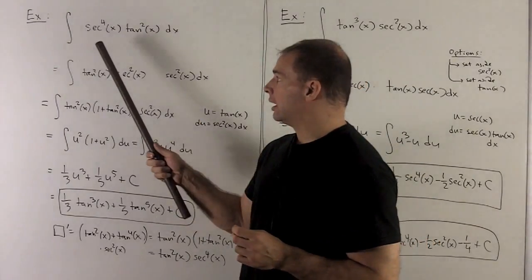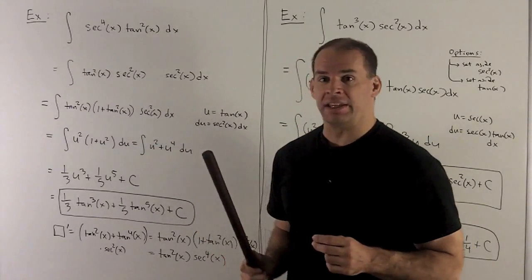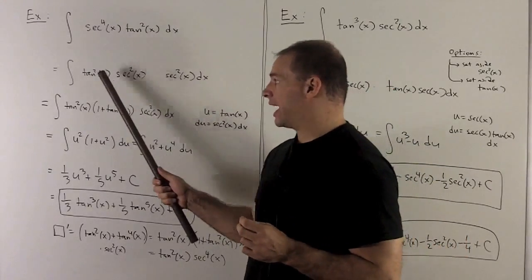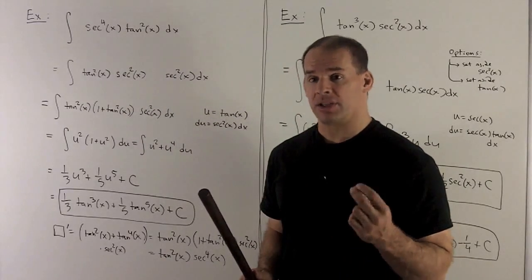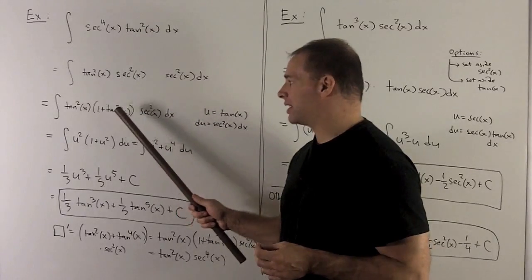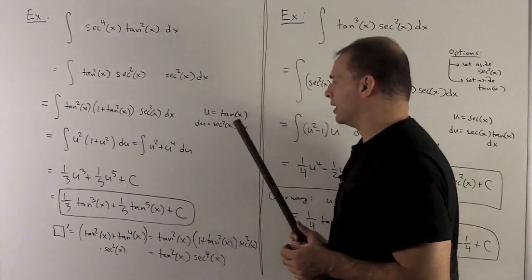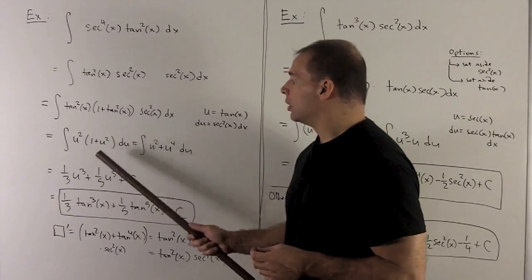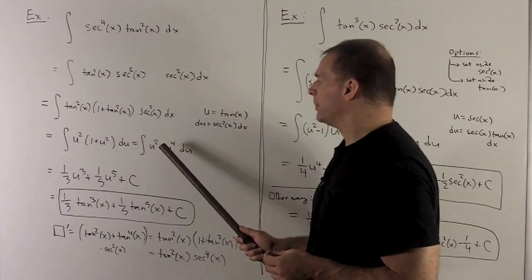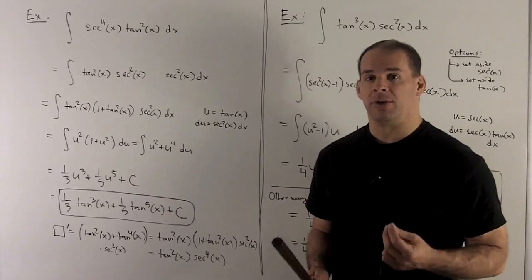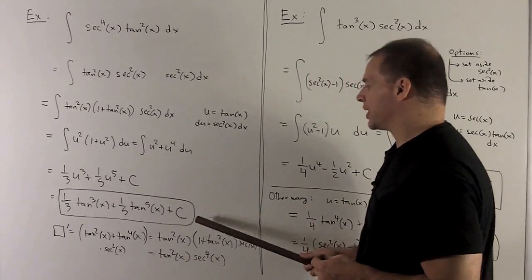Let's look at another example with Case 1: the integral of sec⁴x · tan²x dx. The power on secant is even, so we set two aside, leaving tan²x · sec²x. We rewrite the remaining sec²x as 1 + tan²x. Substituting u = tan x with du = sec²x dx, we get the integral of u²(1 + u²) du = u² + u⁴ du. Integrating gives (1/3)u³ + (1/5)u⁵, and substituting back gives (1/3)tan³x + (1/5)tan⁵x + C.